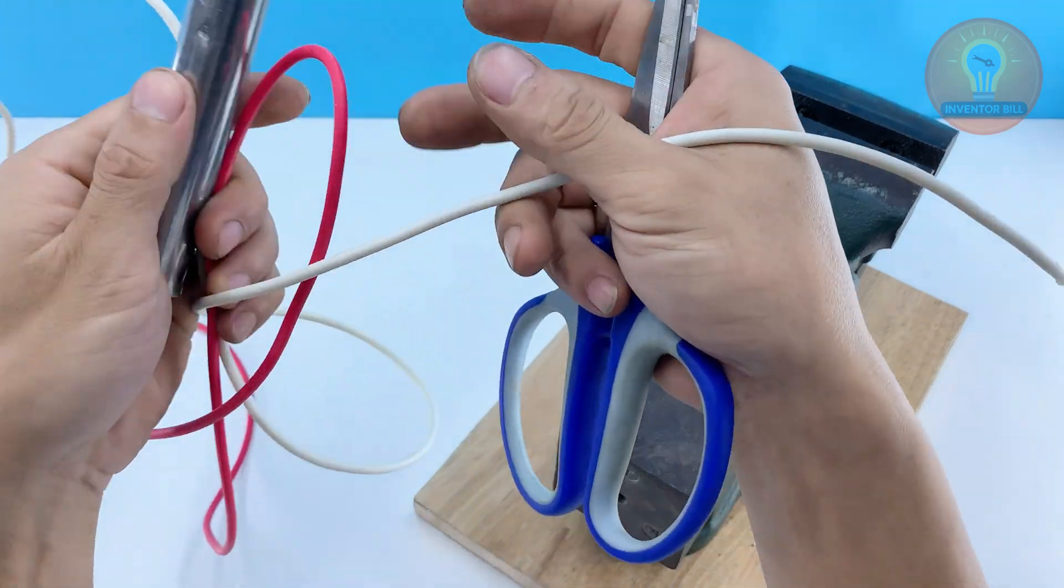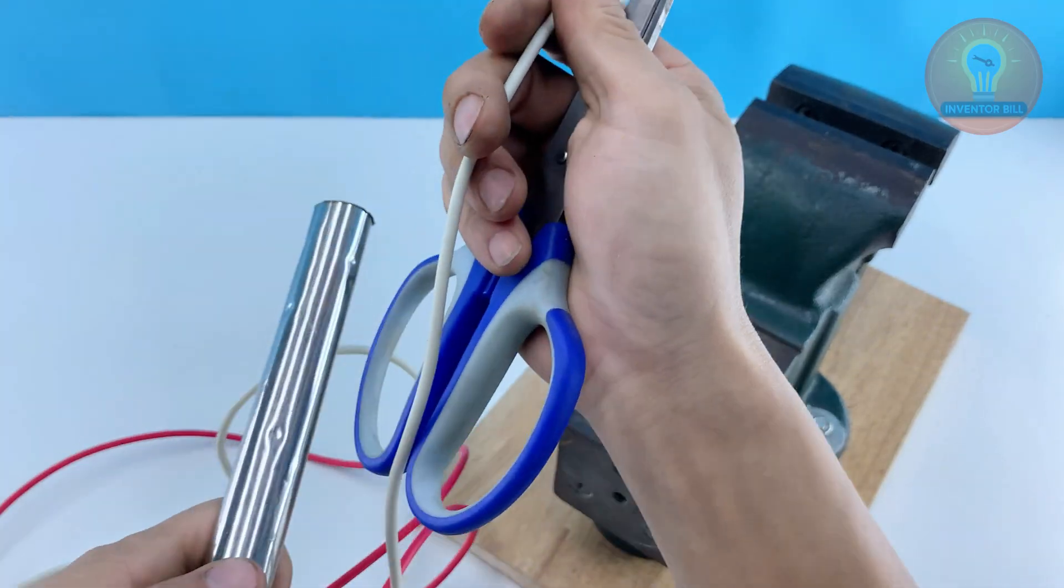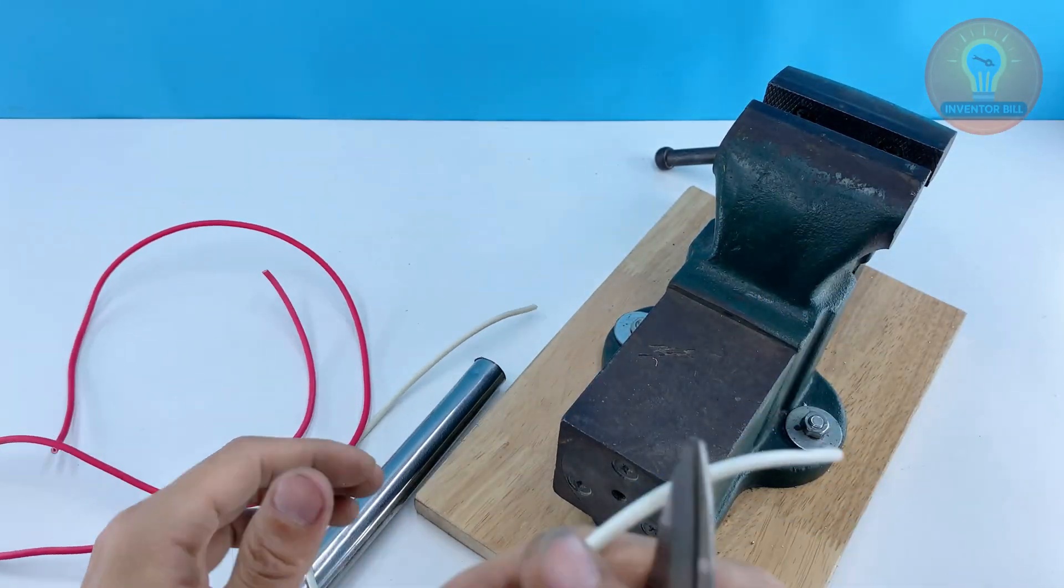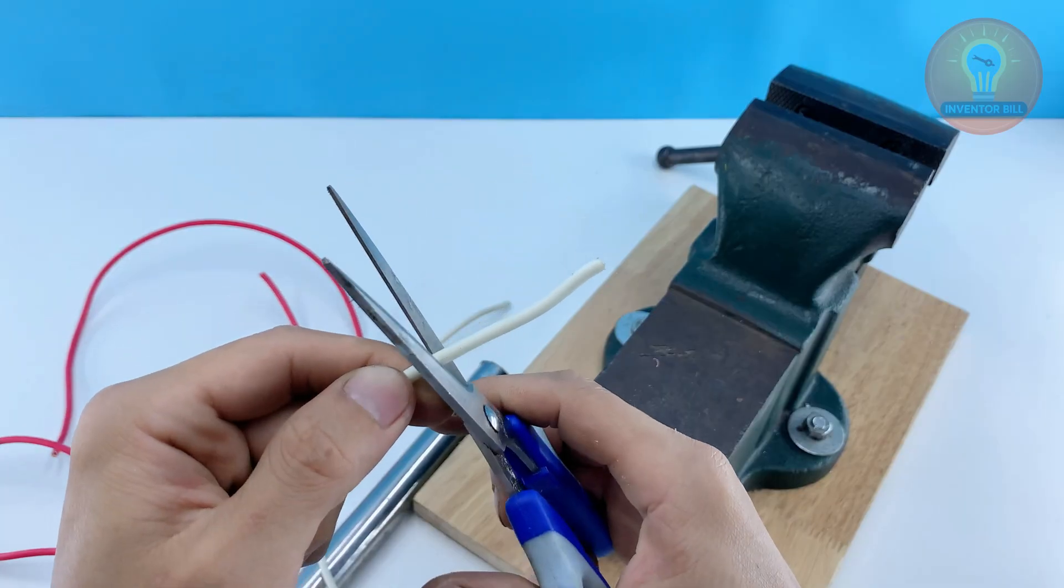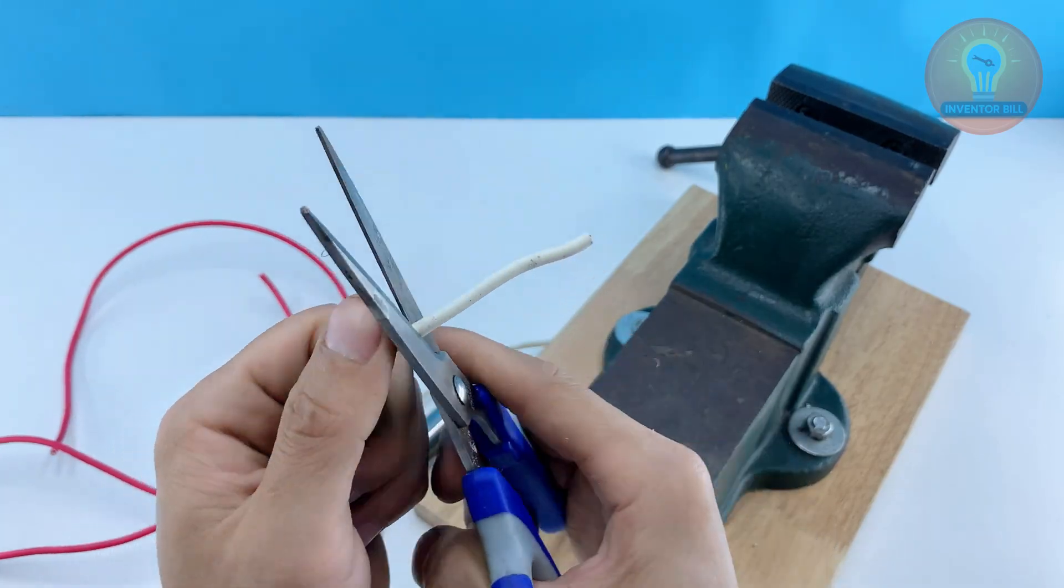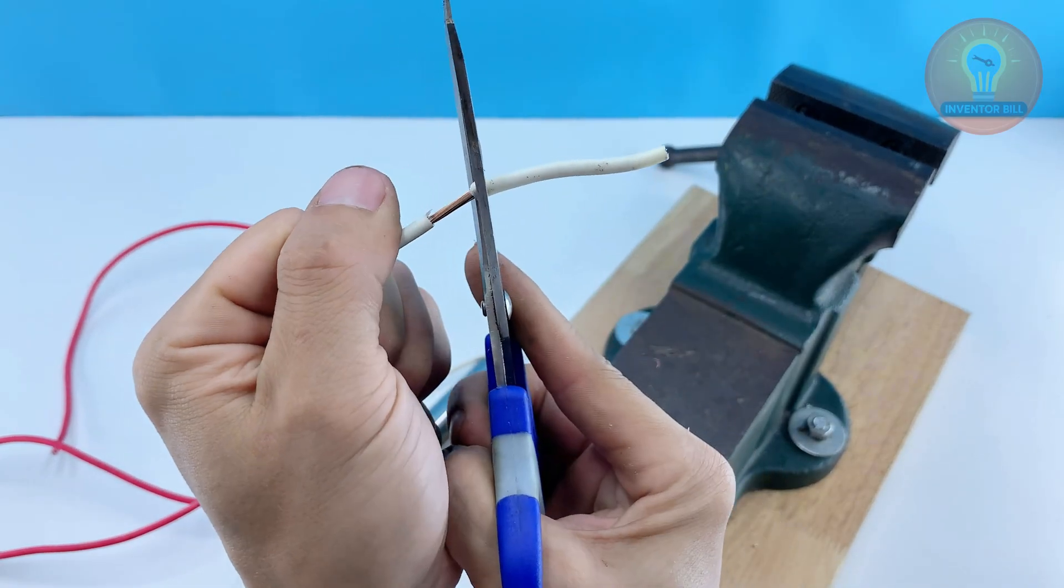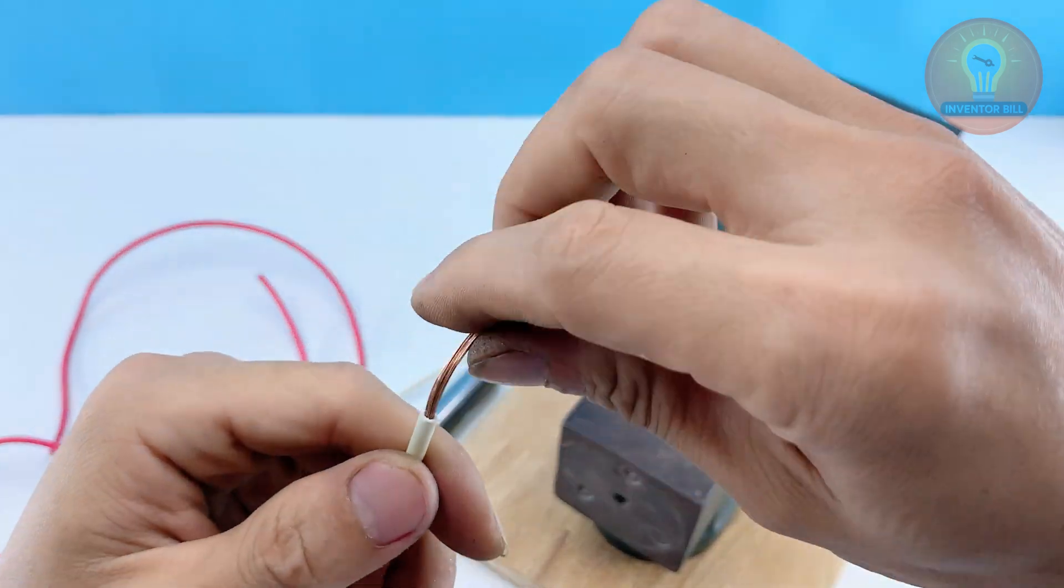Now let's make the power connection for our homemade welding handle. You'll need two wires, one white and one red, both thick enough to handle the current. Start with the white wire. Strip about an inch of insulation from one end to expose the copper strands.